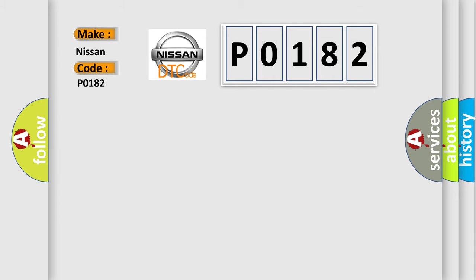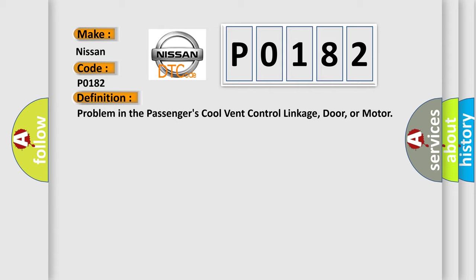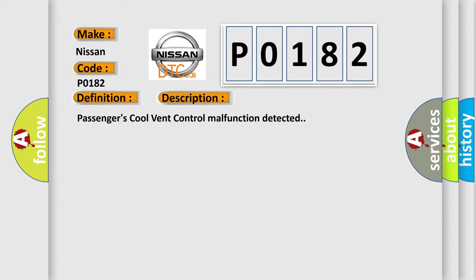The basic definition is problem in the passenger's cool vent control linkage, door, or motor. And now this is a short description of this DTC code: Passenger's cool vent control malfunction detected. This diagnostic error occurs most often in these cases.